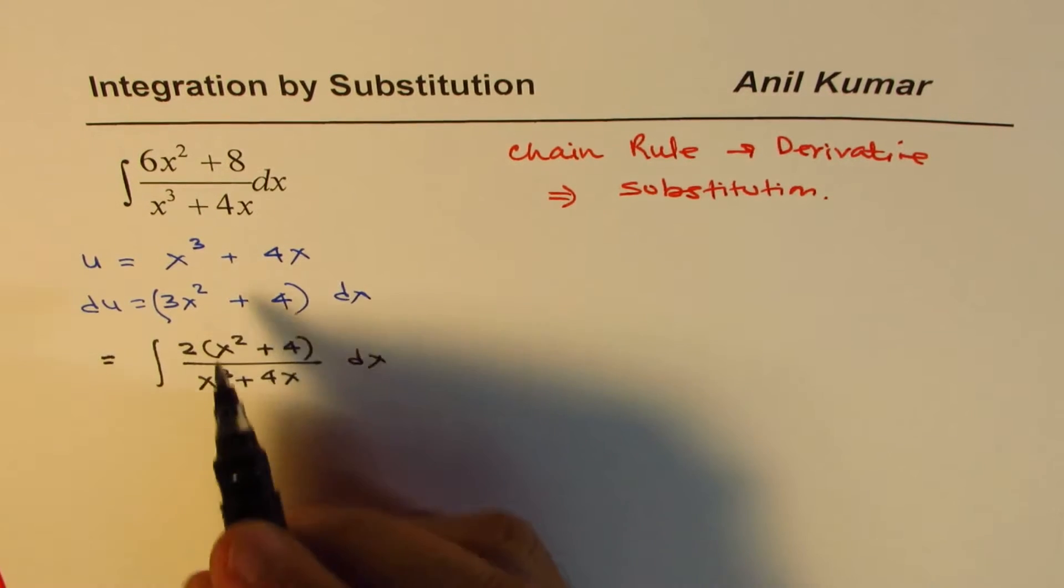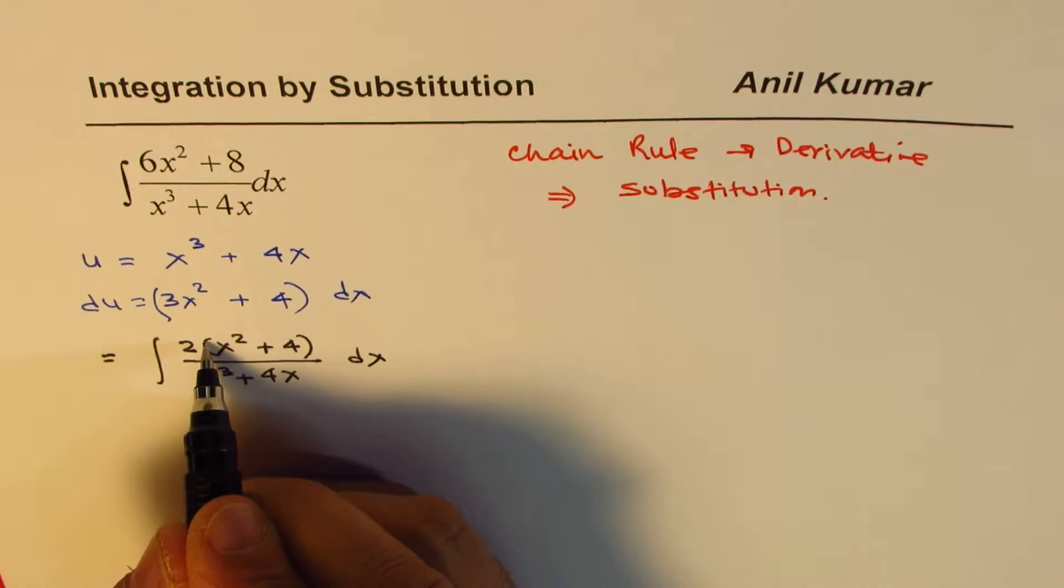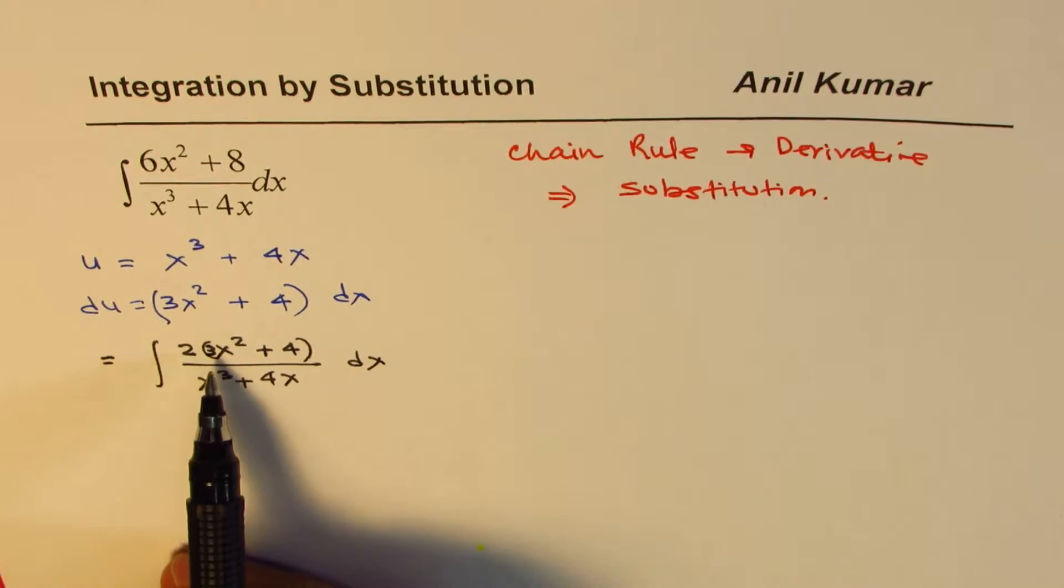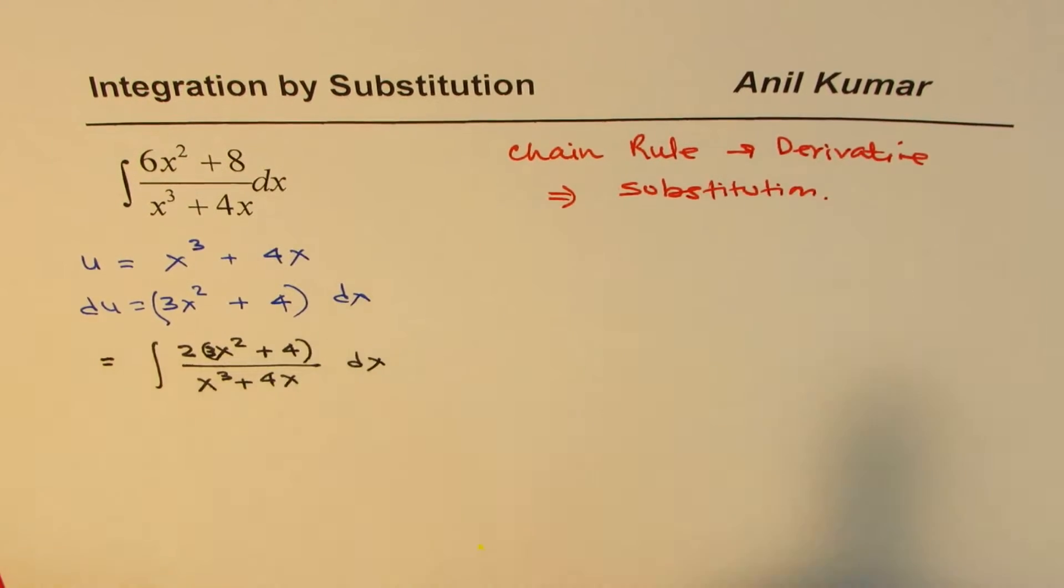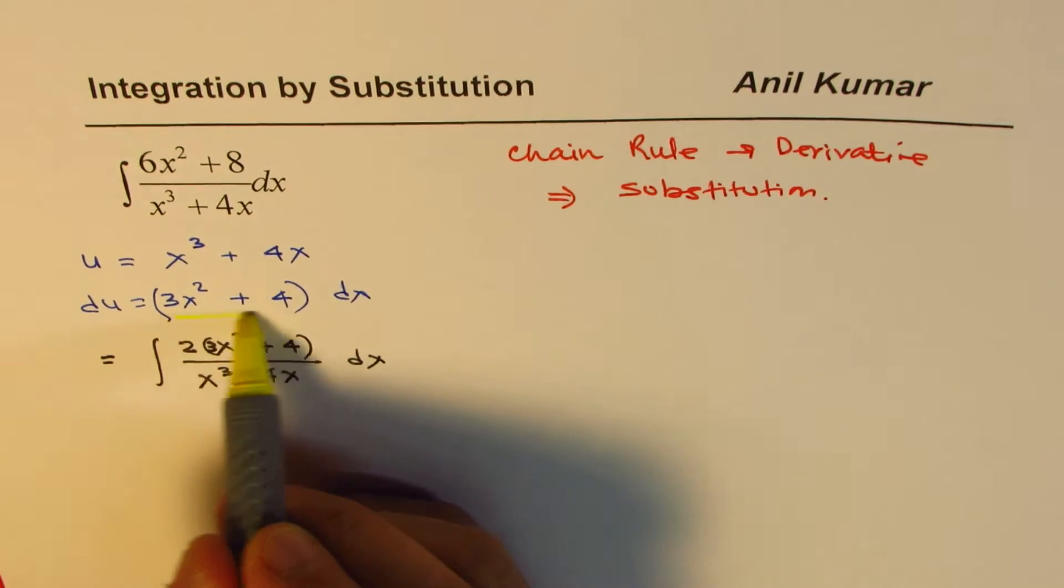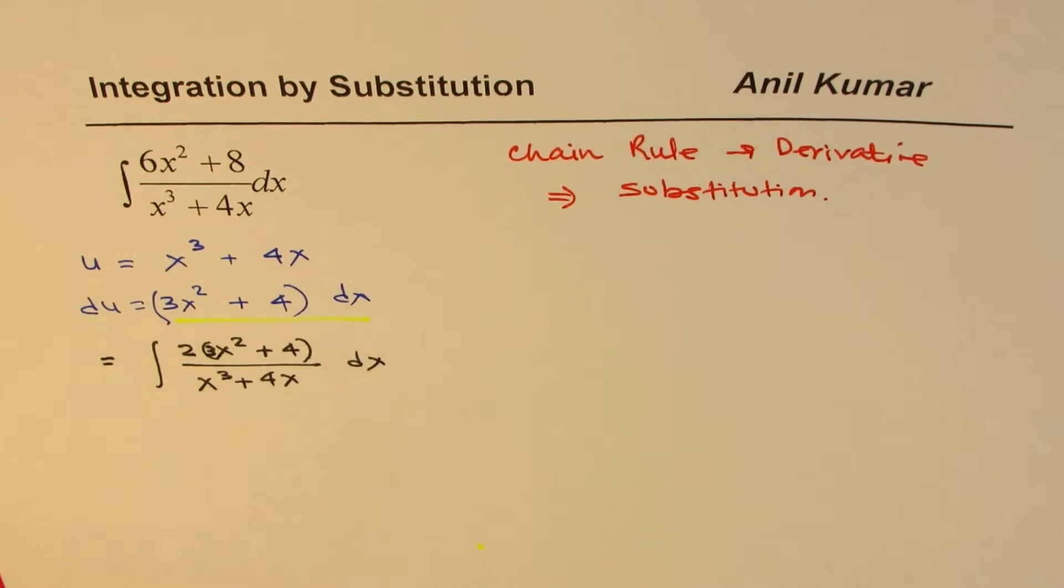I'm sorry, I forgot to write 3 here. 6 divided by 2 is 3, so that's what it is. As you can notice, the numerator part is written here, and the denominator is u.